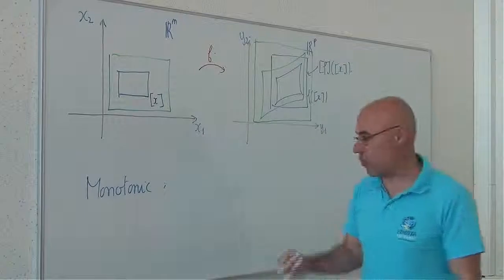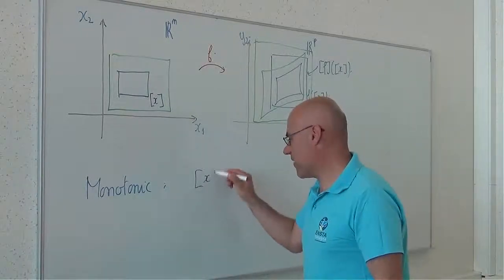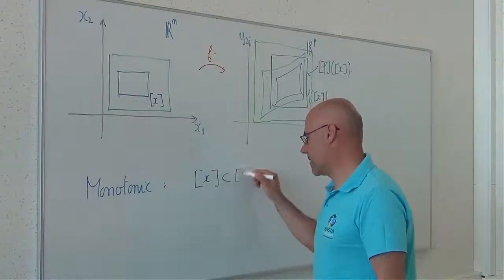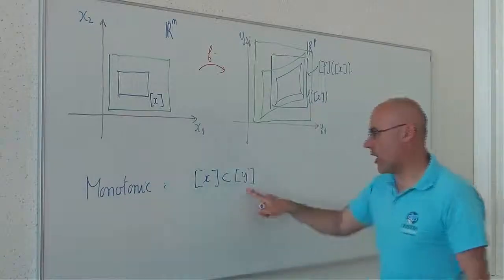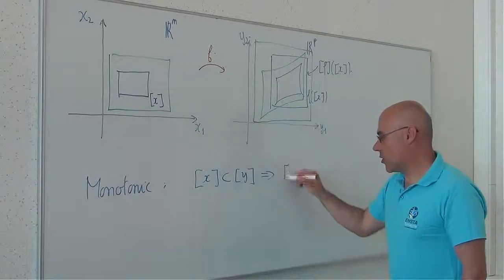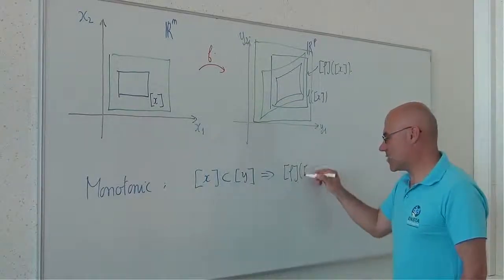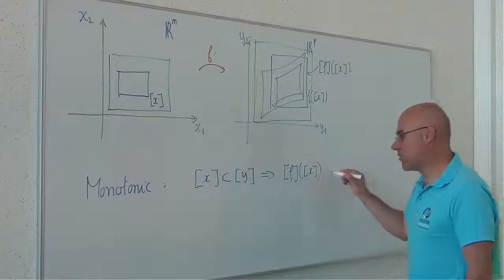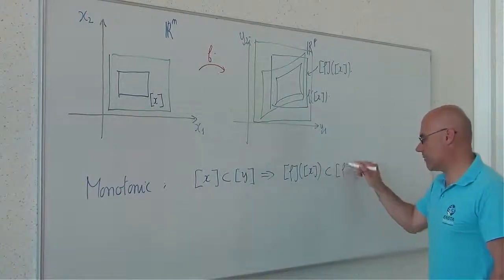It means that I have the following properties. If x is included in y, y corresponds to the green box. Then, if I apply the inclusion function, I will preserve the monotonicity.